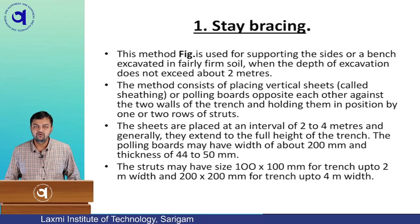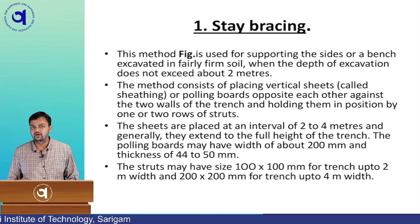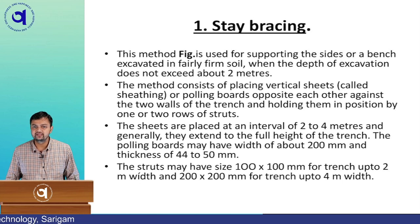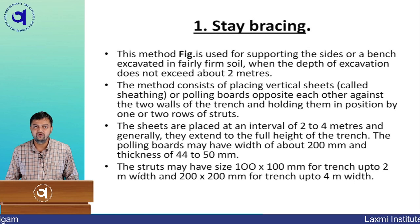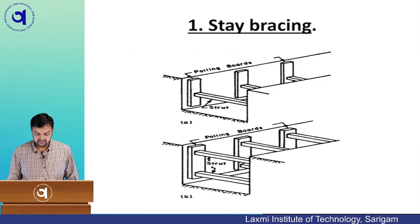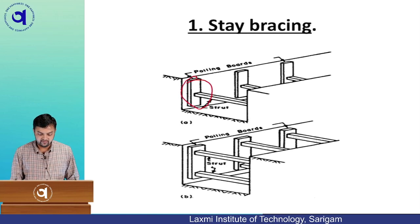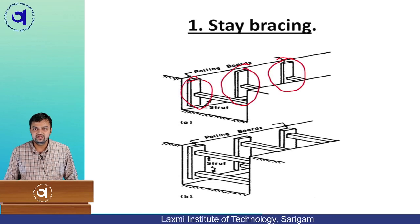The first method is stay bracing. This method is used for supporting the sides of a trench excavated in fairly firm soil where water content is low. It is used when the depth of excavation does not exceed about 2 meters. The method consists of placing vertical sheets called polling boards opposite each other against the walls of the trench on both sides, as visible in the figure.